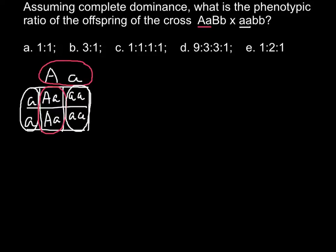Now let's consider the second pair of alleles. For one parent this is going to be heterozygous — capital B, small b — and the other one would be homozygous recessive for both alleles. We can say, for example, that this heterozygous genotype stands for the tall plant, and this homozygous recessive stands for the small plant.